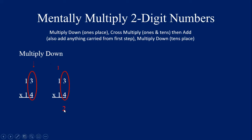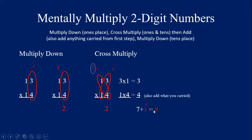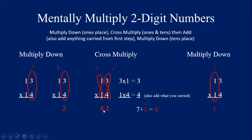First step: multiply down — 3 times 4 gave us 12, put our 2, carry our 1. Next step: cross multiply. 3 times 1 gives us 3. Then 1 times 4 gives us 4. Add these two numbers together: 3 plus 4 equals 7. But 7 is not the answer yet because we have to add that 1 we carried, so 7 plus 1 equals 8. That 8 is the answer in the tens place — put our 8 right here. Last step: multiply down in the tens column. We have a 1 and a 1, so 1 times 1 is 1. Put that 1 as the answer in the hundreds place. The correct answer is 182.